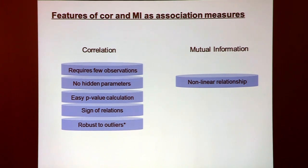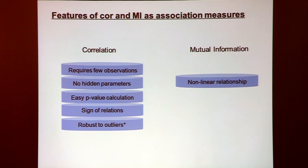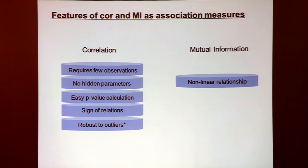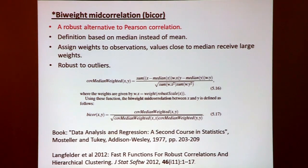The bi-weight mid correlation is also fairly robust to outliers. Despite our preference for correlation, there is a substantial literature on mutual information-based networks. One main advantage cited is that it detects non-linear relationships. While correlation measures — including Spearman — detect monotonic relationships, mutual information captures general dependence patterns, which is clearly attractive.